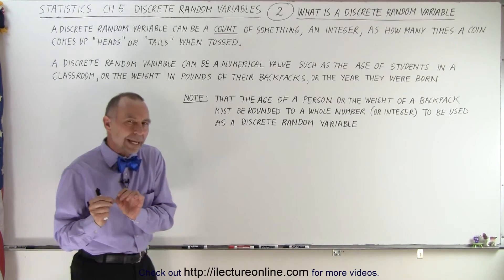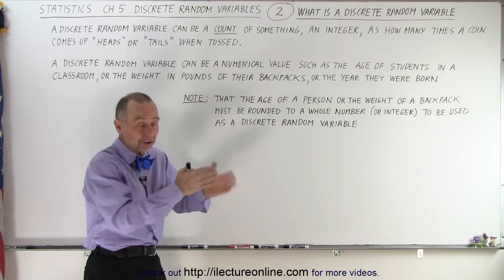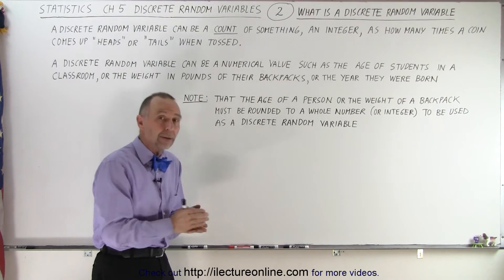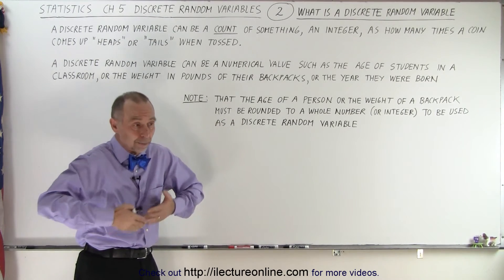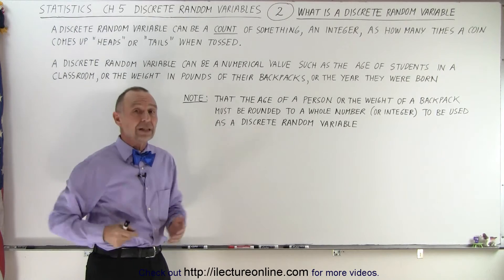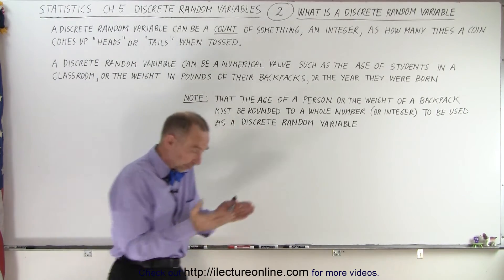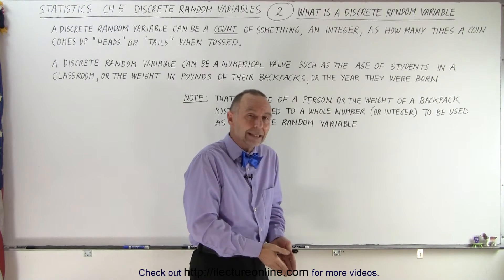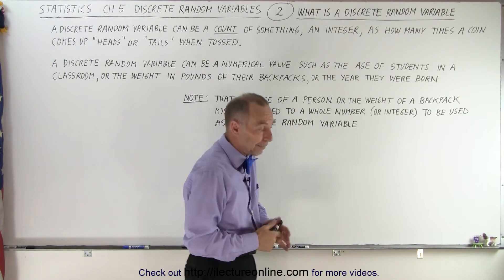But when you want to make a discrete random variable, you want to round it off to the whole number - let's say 160 pounds or 161 pounds, an integer value. And then if you start measuring the weight of students in a classroom, you never know what that is going to be until the person steps on the scale.